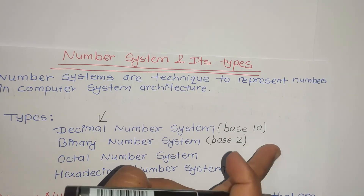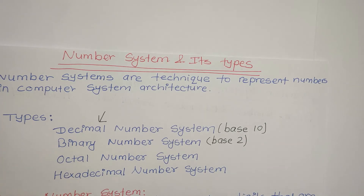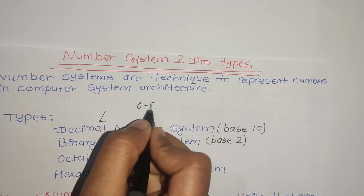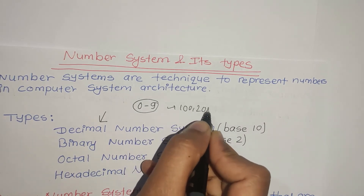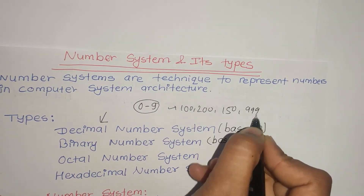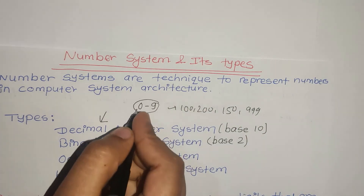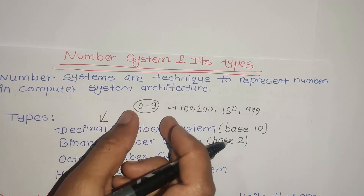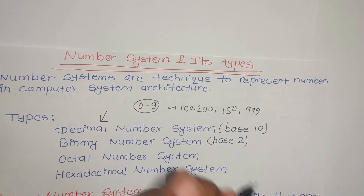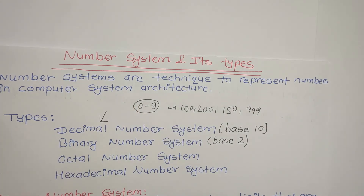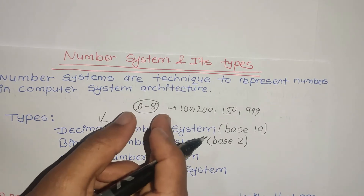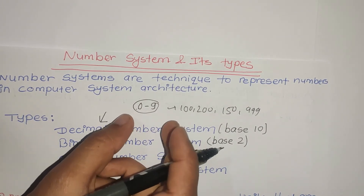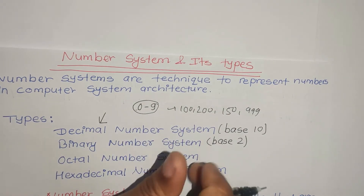In decimal, the base is 10 because it has 10 digits. The digits are 0 to 9. For example, numbers like 200, 250, or 999 all use digits 0 to 9. If you count from 0 to 9, there are 10 digits, so the decimal base is 10.